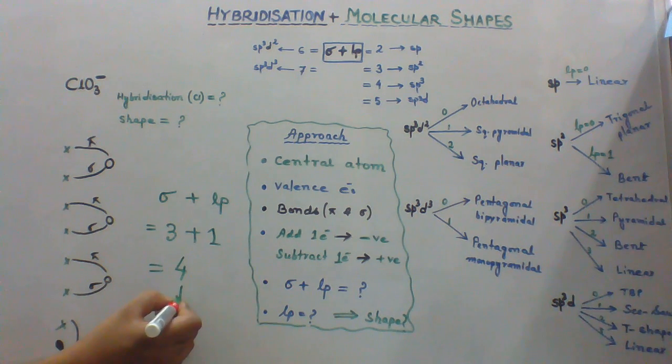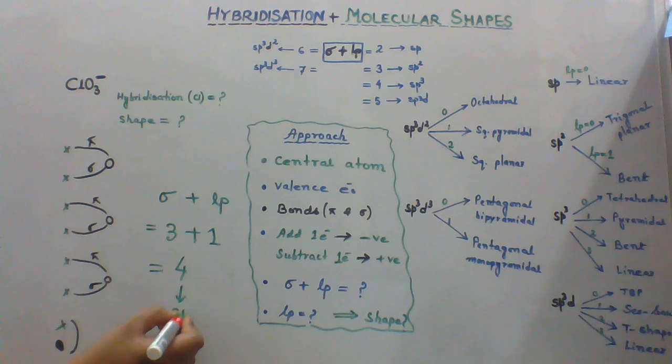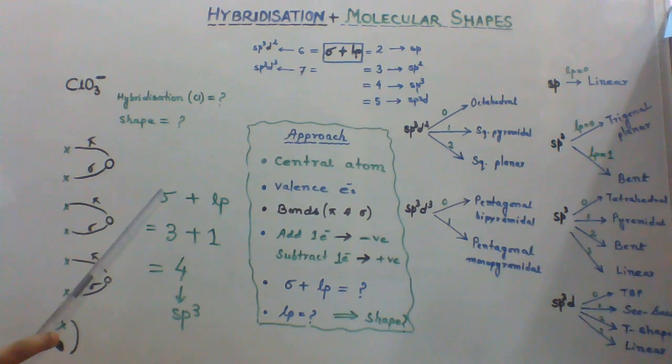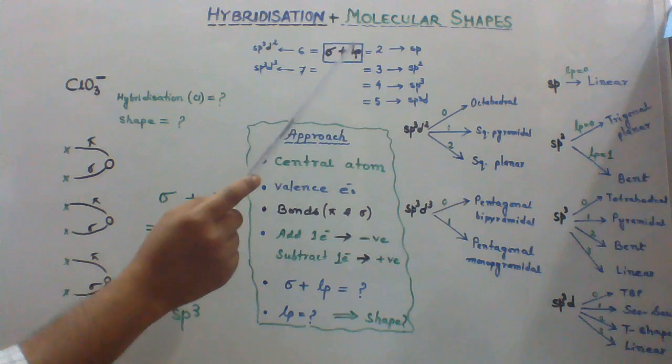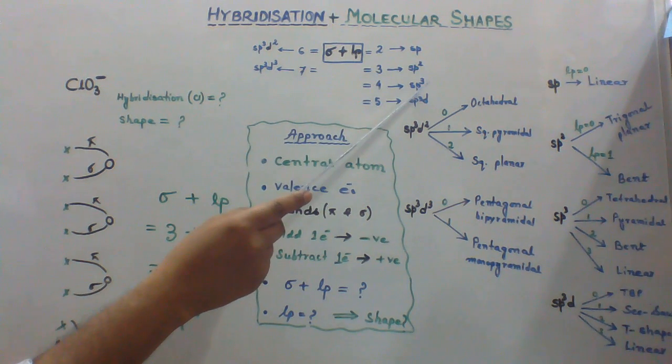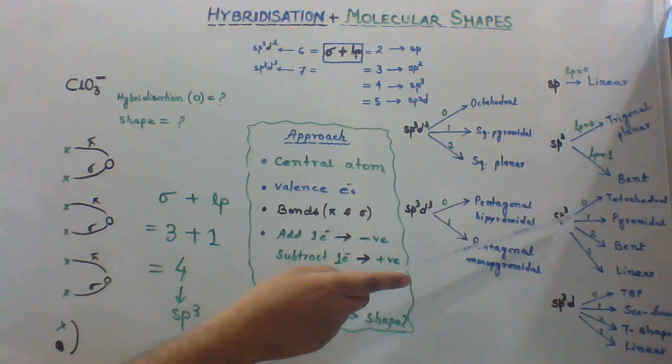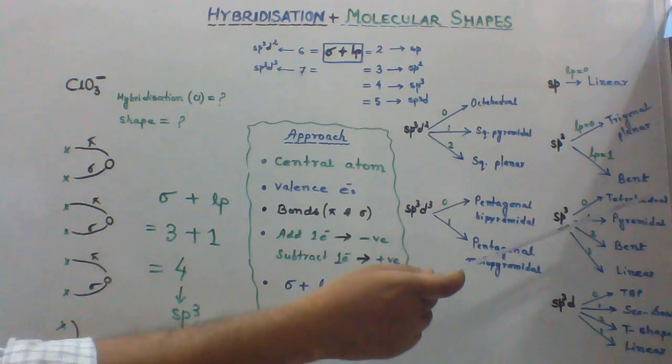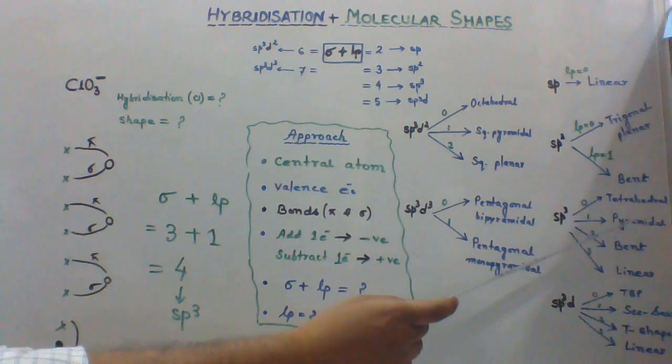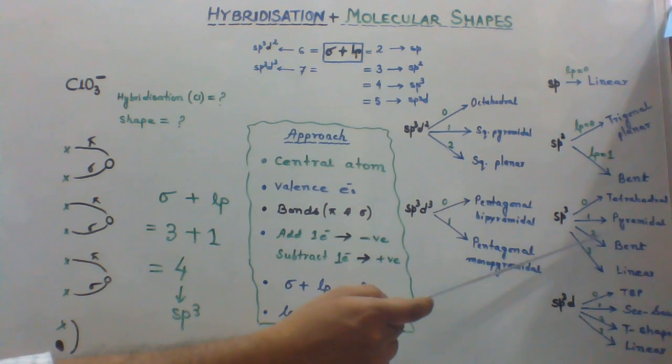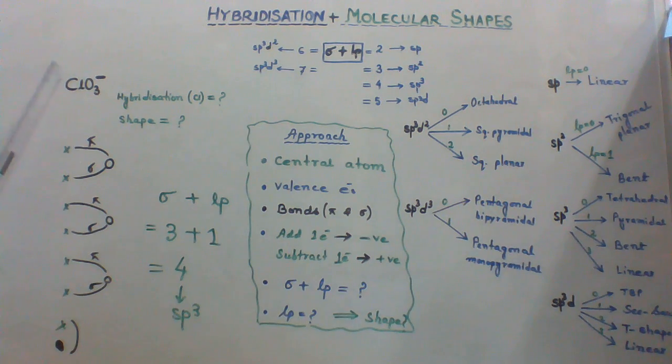And it corresponds to sp3 hybridization. Meaning, if the summation of sigma and lone pairs comes out to be 4, it corresponds to sp3 hybridization. For sp3 hybridization, we have 4 possibilities. It can be either tetrahedral or pyramidal or bent or linear depending upon number of lone pairs present in the species.